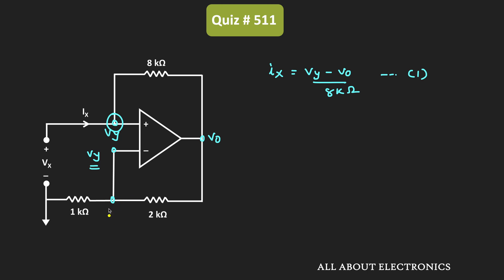So now applying the KCL at this node, we can write this Vout minus Vy divided by 2 kilo ohm, that is this current, is equal to Vy minus 0 divided by 1 kilo ohm.